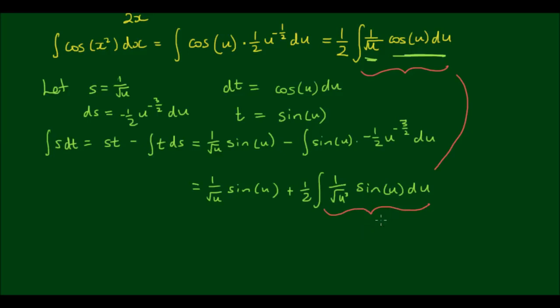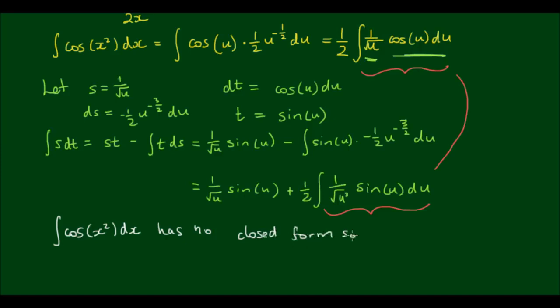You might be thinking 'bugger' — but this is actually quite handy to know, because it means the integral of cos(x²) cannot be expressed as a closed form solution. So the integral of cos(x²) dx has no closed form solution. What that means is we can't express this as a finite combination of elementary functions — cosines, sines, exponentials, tans, natural logs, whatever. But we can still actually integrate this, and this is where the Maclaurin series comes in handy.